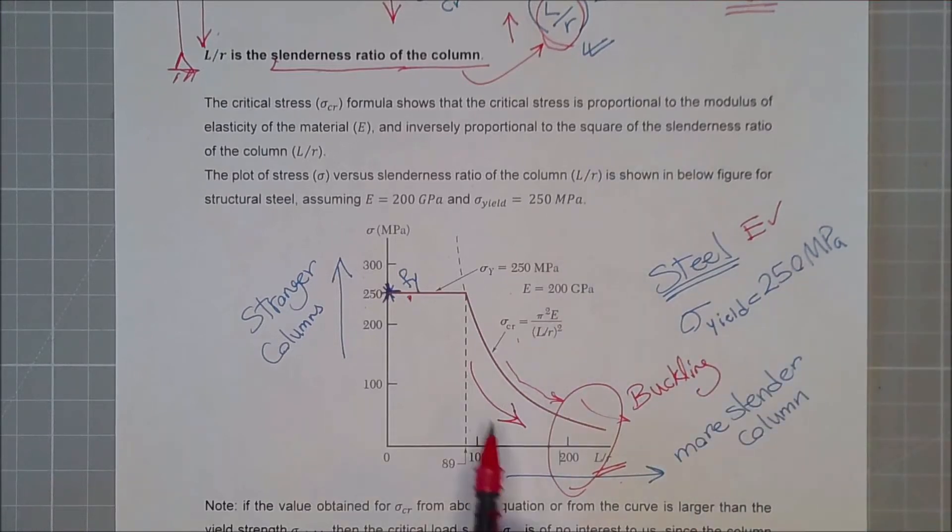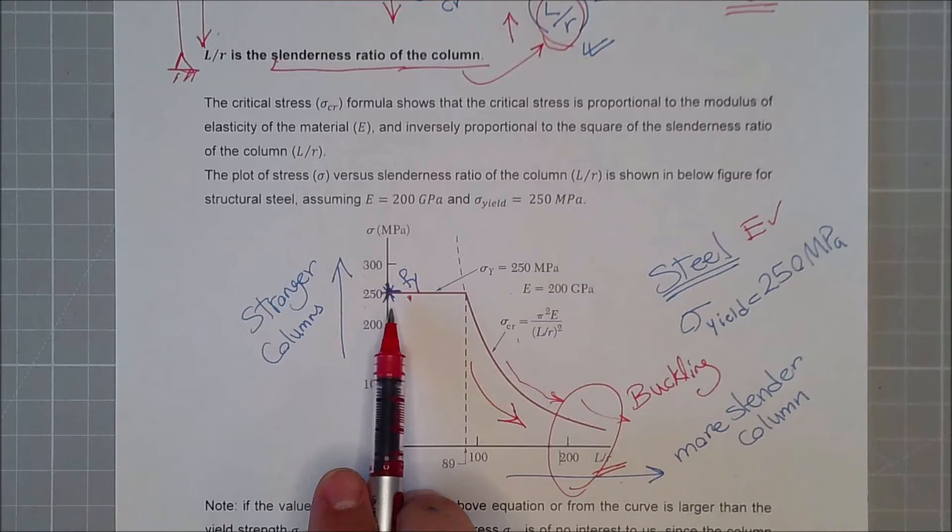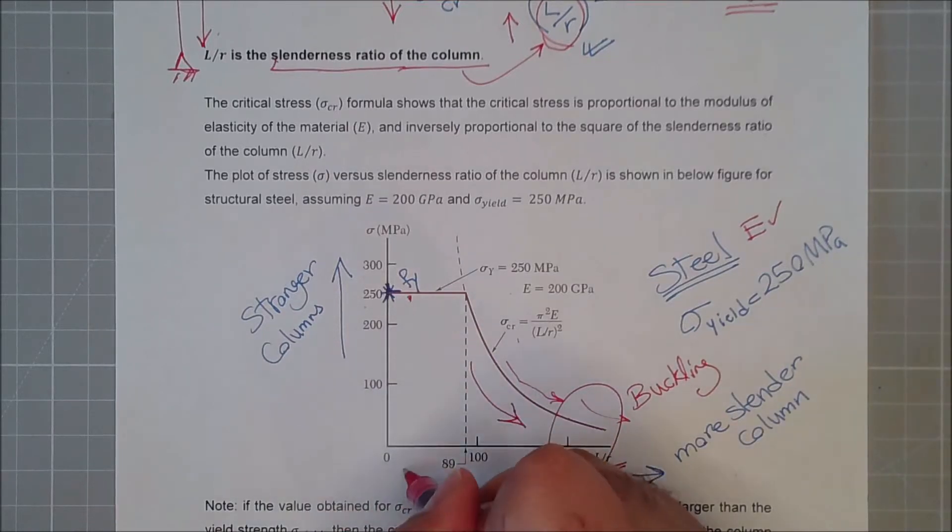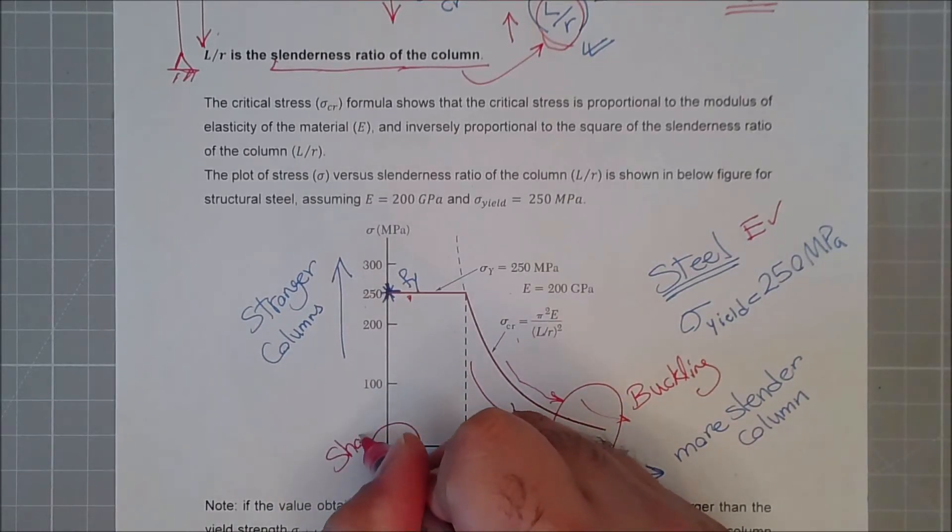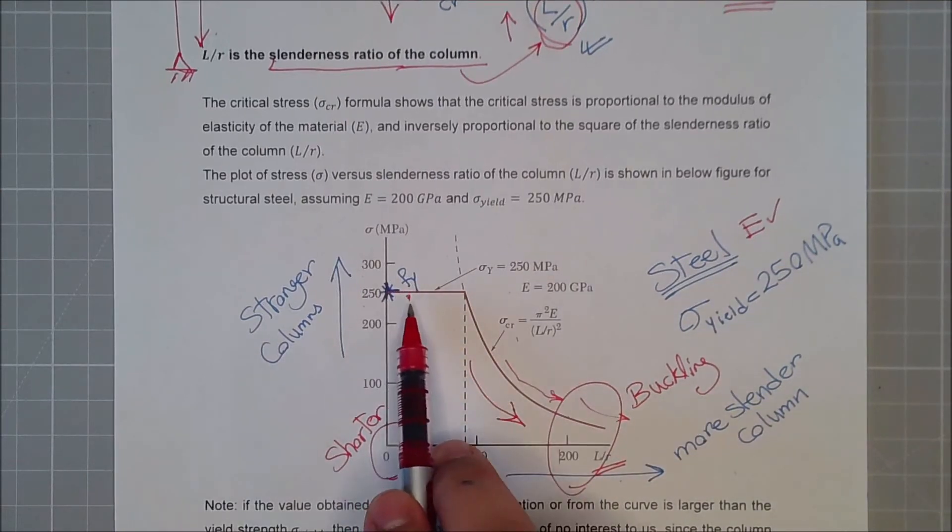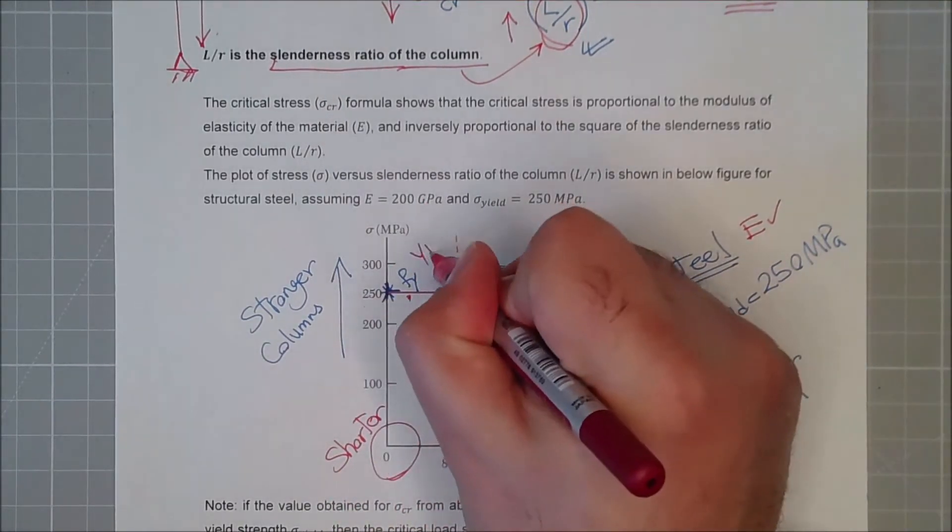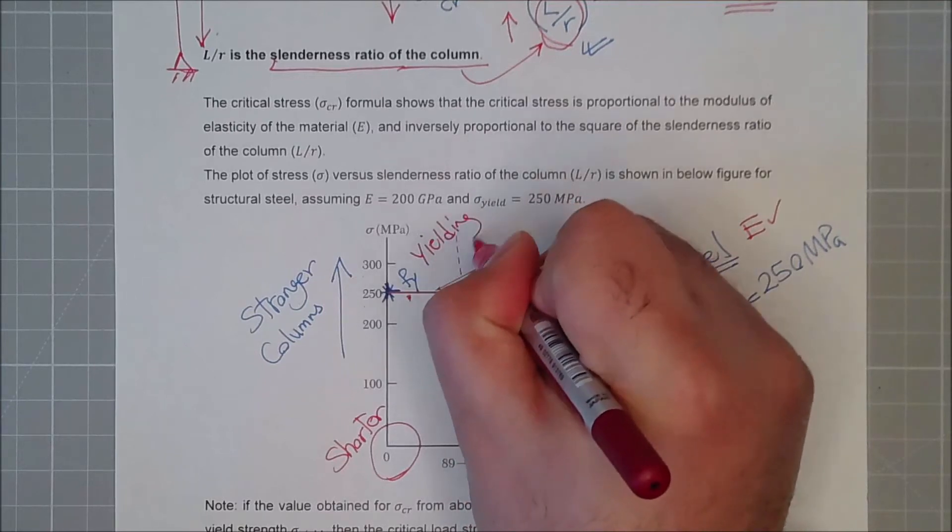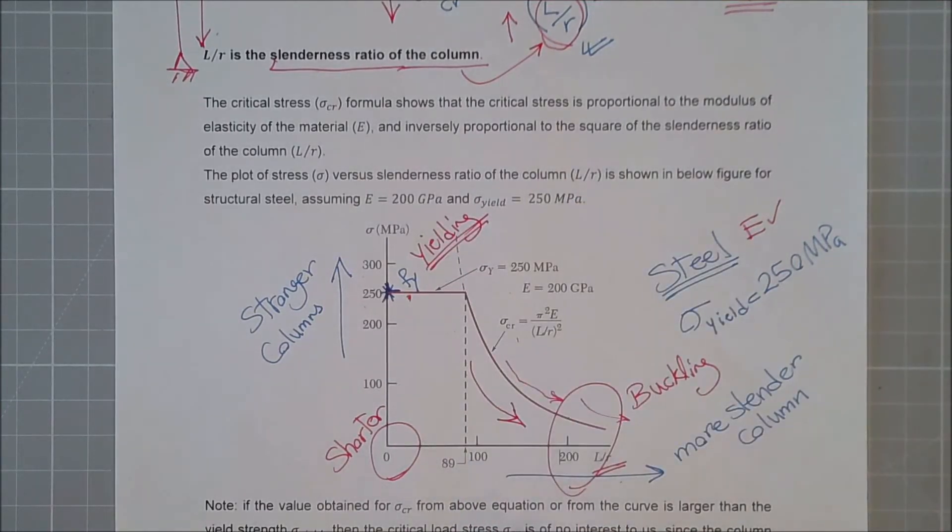So increase of buckling susceptibility, and for shorter columns, meaning for here shorter columns, because the slenderness ratio is smaller, the failure happens due to yielding. So this proves the first discussions that we had.